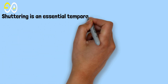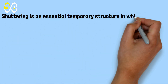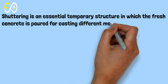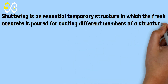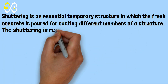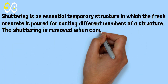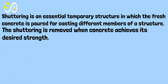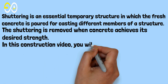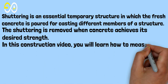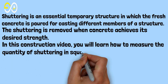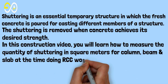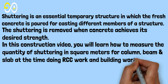Shuttering is an essential temporary structure in which fresh concrete is poured for casting different members of a structure. The shuttering is removed when concrete achieves its desired strength. In this construction video, we will learn how to measure the quantity of shuttering in square meters for column, beam, and slab at the time of doing RCC work and building work.